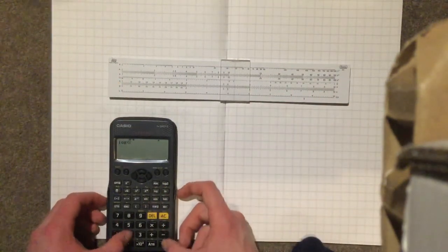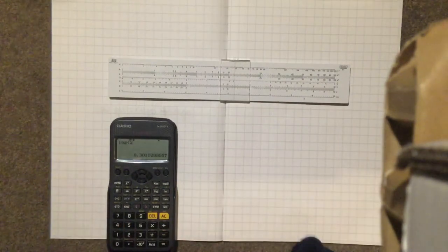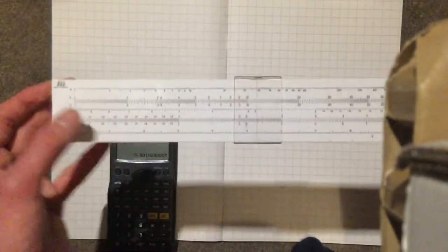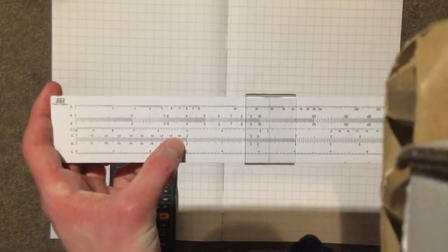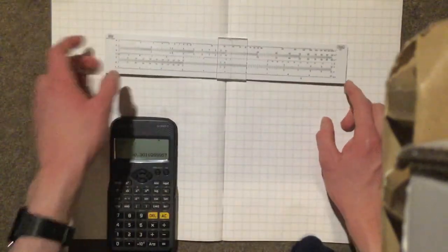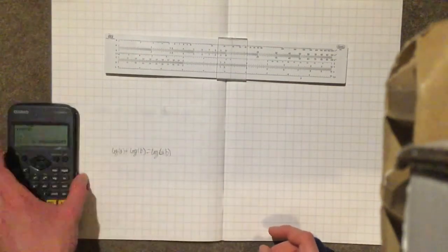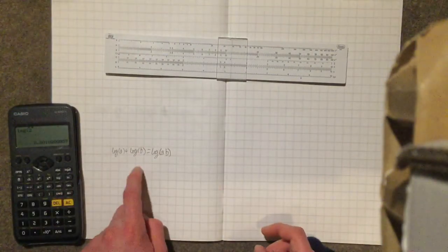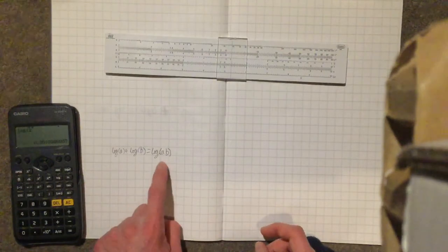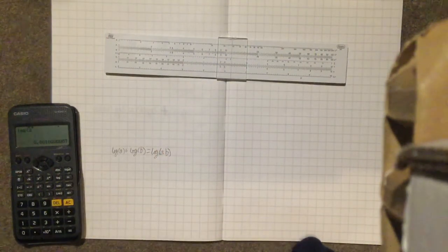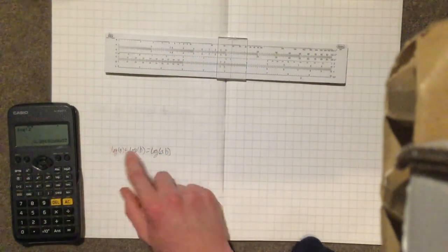So the log of 2 is a bit over 0.3. So that 2 is 0.3, or a bit over, along this scale. And logs have a very nice property, that the log of a plus the log of b equals the log of a times b. So that means we can turn multiplications into additions.